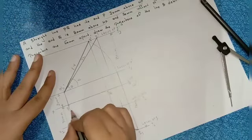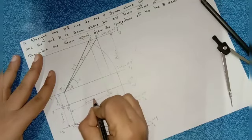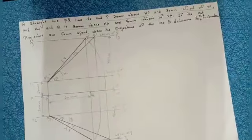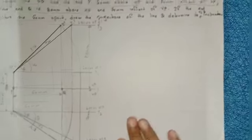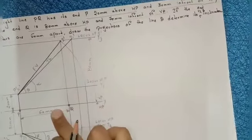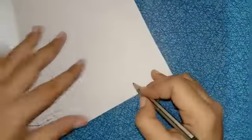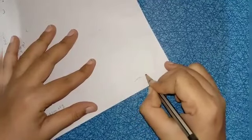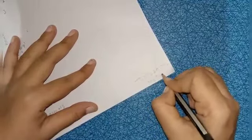In this question, distance between projectors P to Q is 60mm. For all these problems, with the help of the front view we are constructing the true length, and with the help of the top view we are constructing the true length — same process, same method. This is the general method. Next, we are solving this problem by the trapezoidal method.